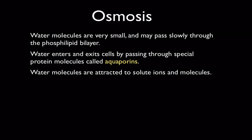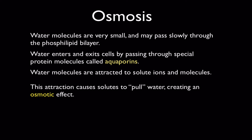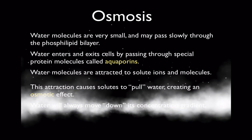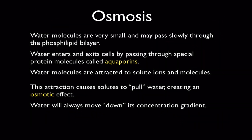Water molecules dissolve solutes, meaning water molecules are attracted to solute ions or molecules. This attraction causes solutes to effectively pull water molecules towards them — one way of thinking of osmosis. Water always moves down its concentration gradient, flowing from where there's a lot of water to where there's not much water. Solutes dissolved in water have the effect of reducing the concentration of water.